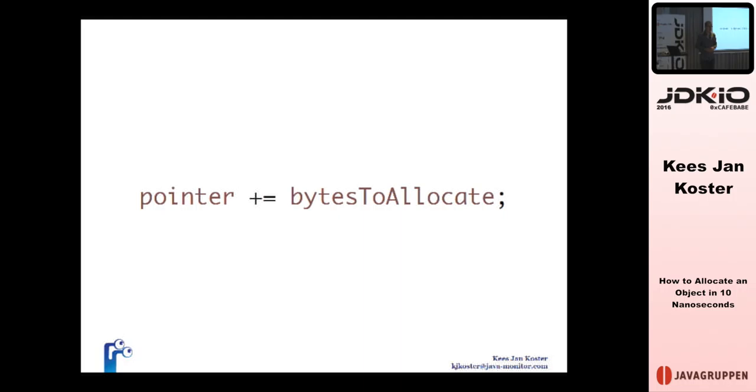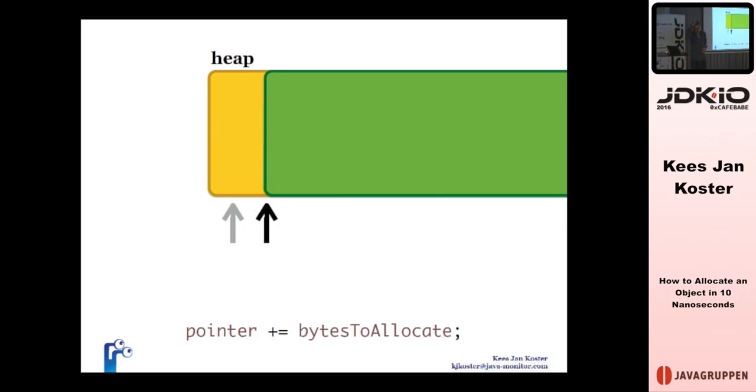Ideally, and this is Nirvana, I'm not sure we're getting there, but ideally, this is the algorithm to allocate memory. I have a memory pointer which points into a large chunk of free memory, and I need 15 bytes, so I move that pointer 15 bytes up, and those 15 bytes are mine, and I can go into initialization of the object. That's the ideal world. No lists, no nothing. This is a single instruction on a modern CPU. How can we get there? How can we get from the free lists and the memory management to this? And yes, the JVM is pretty darn close to this.